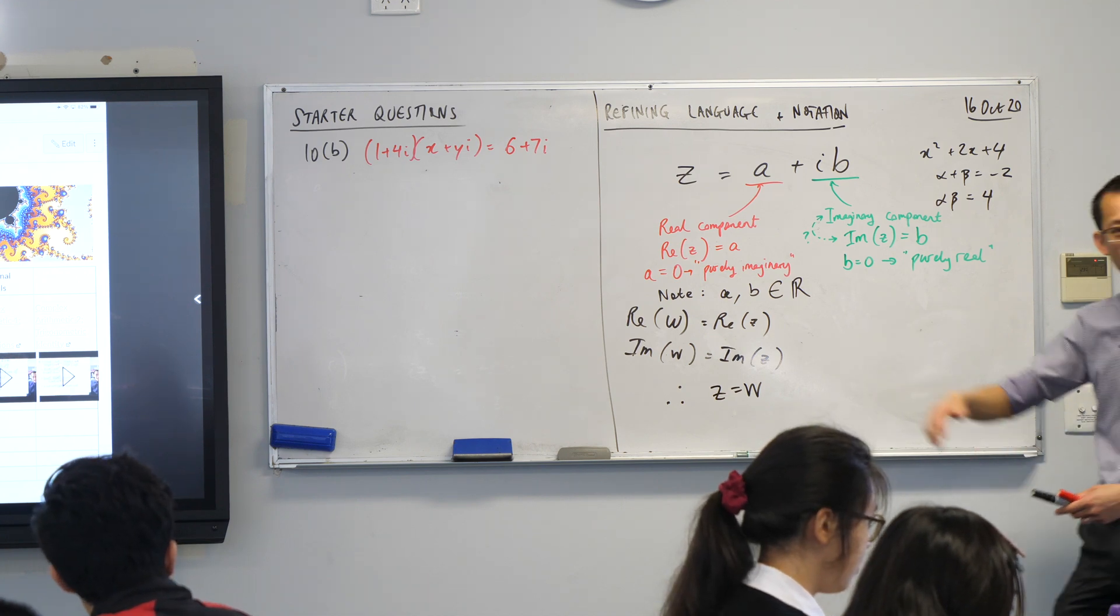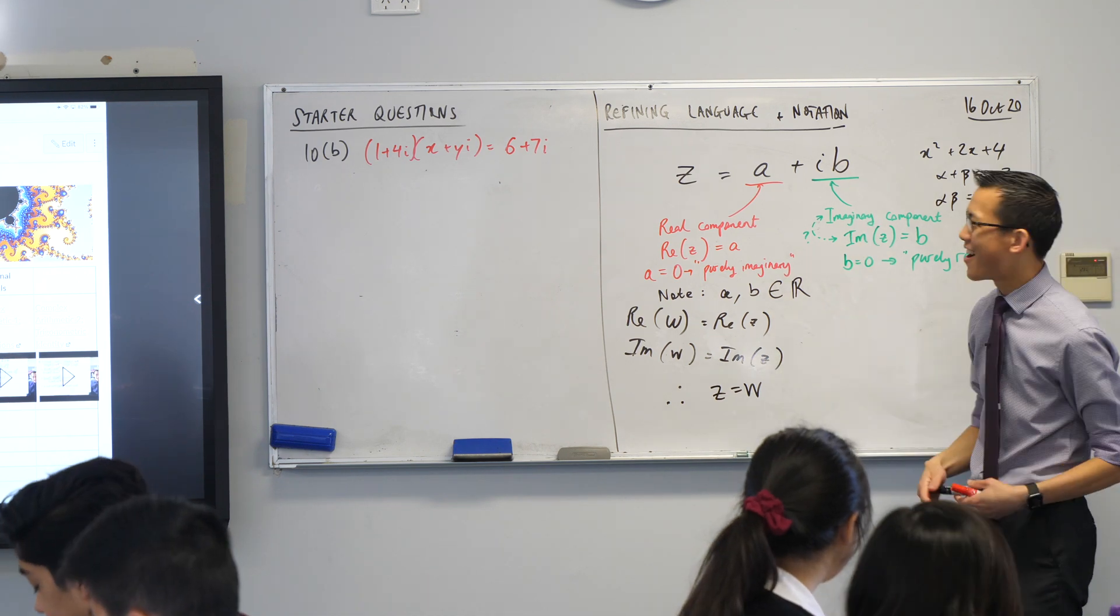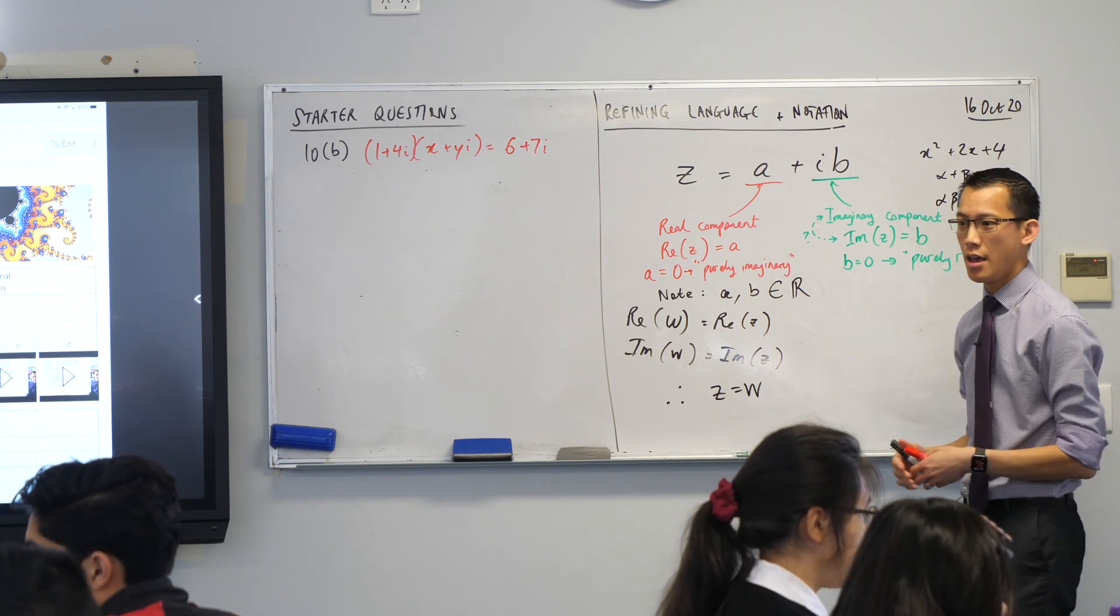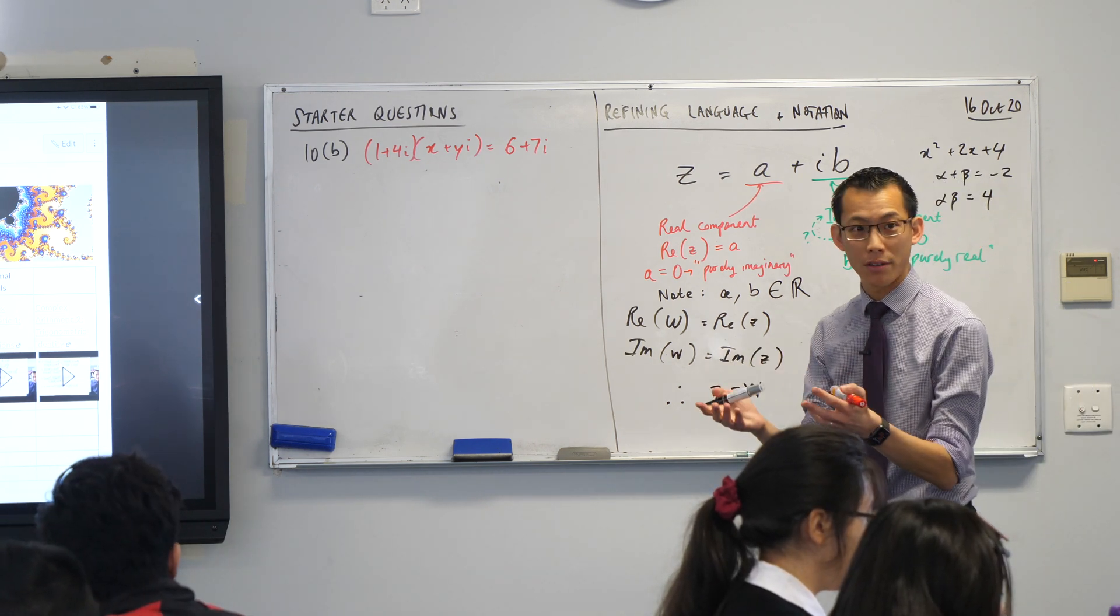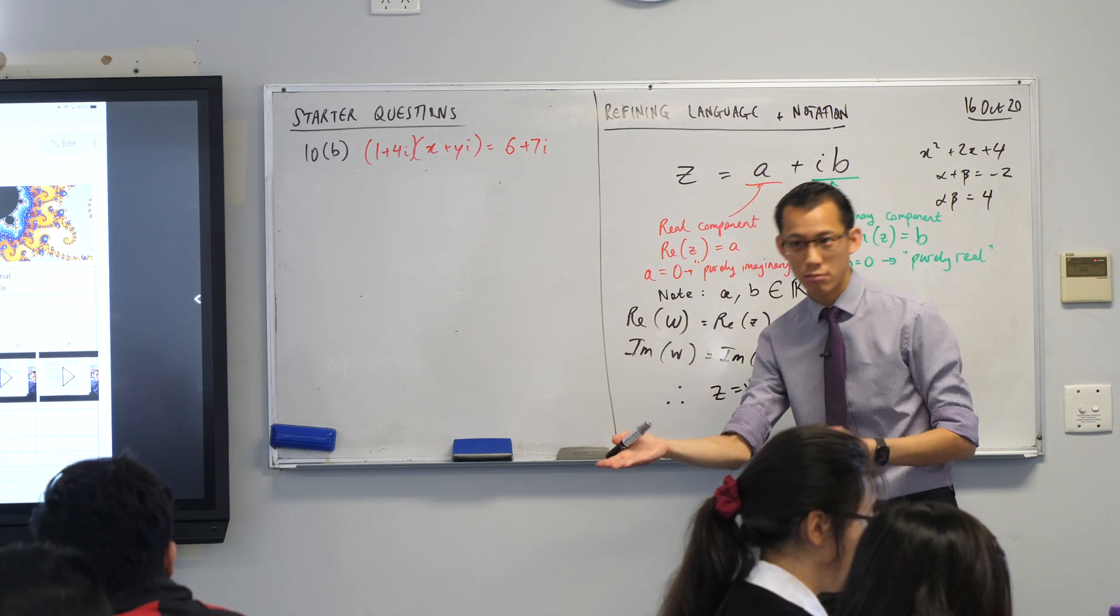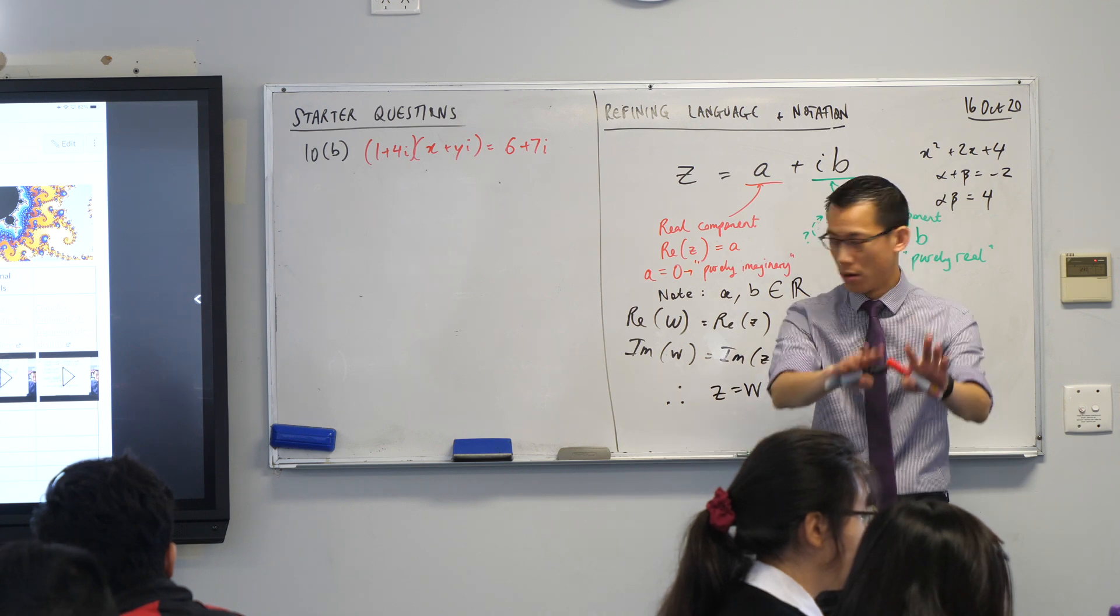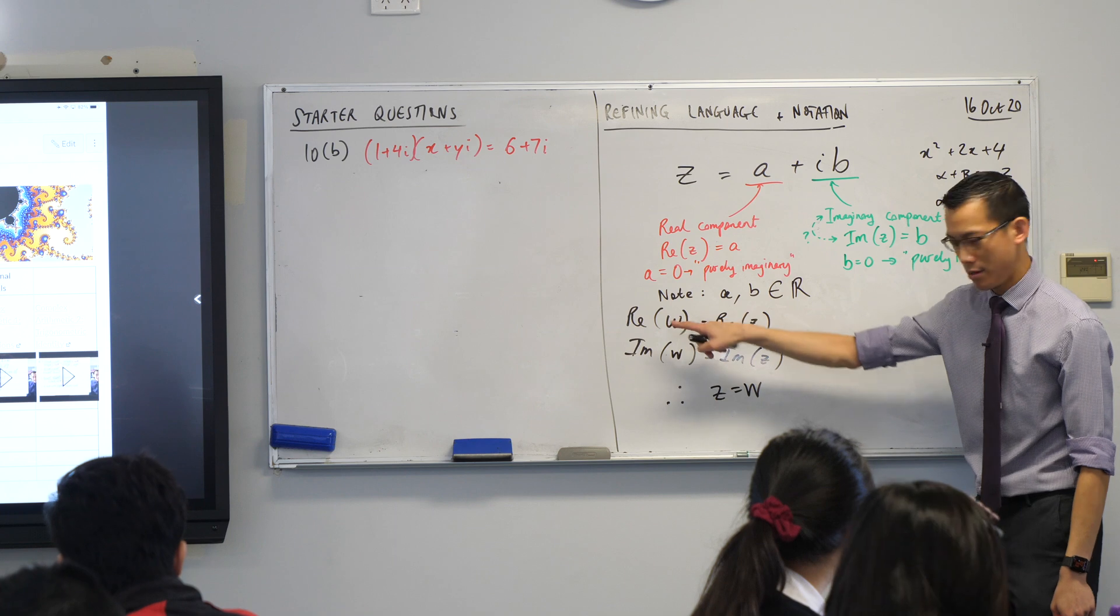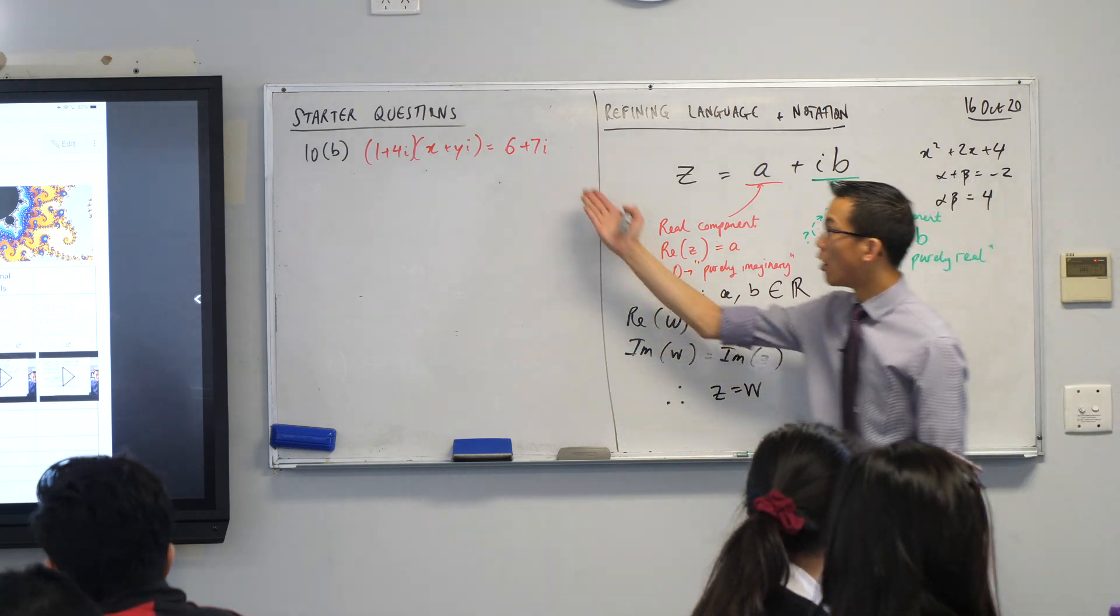So question 10, for A, B, C, D, however many questions there are, it says, read that phrase there right at the top, the preface of the question. It says by, by what? Equating. By equating the real and imaginary components, pause, it's talking about these things, right? By equating the real and the imaginary components of this equation.